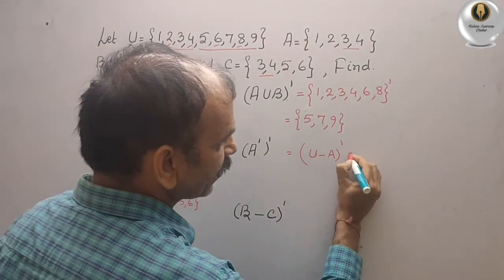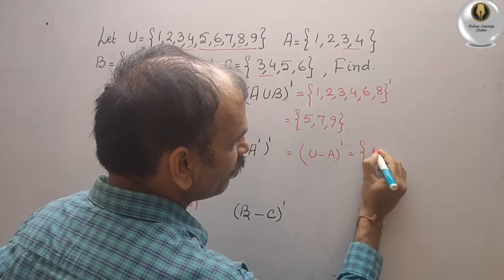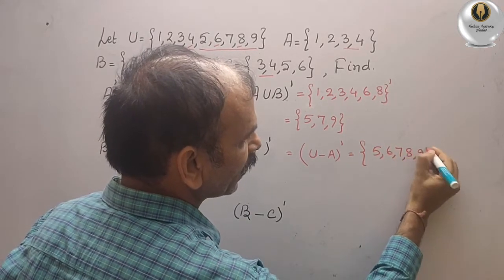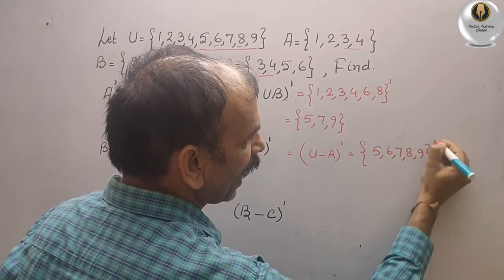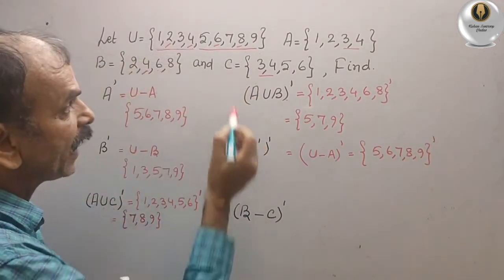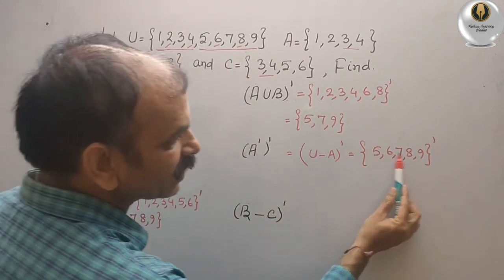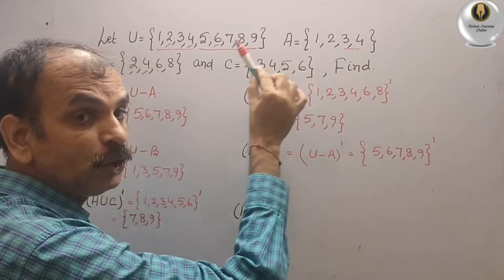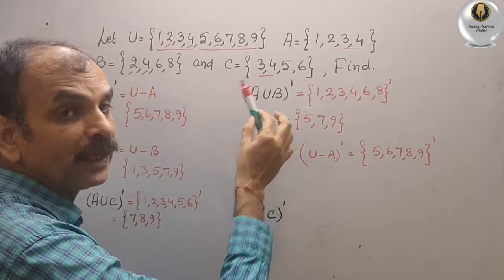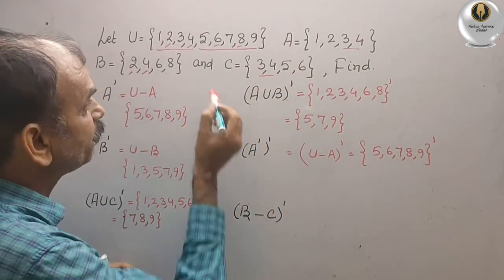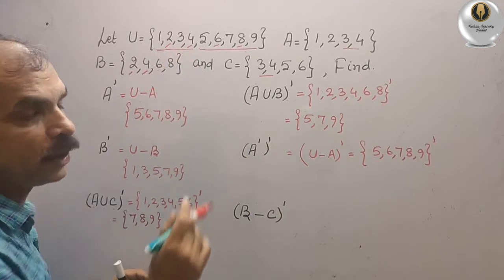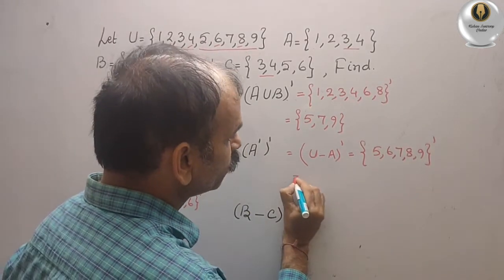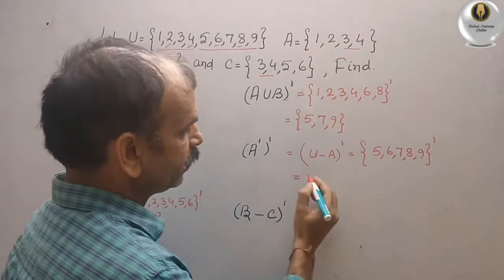Now, A complement is U minus A, so we get {5, 6, 7, 8, 9}. If we complement this again — that means U minus {5, 6, 7, 8, 9} — we get back {1, 2, 3, 4}. That means the double complement equals A only.